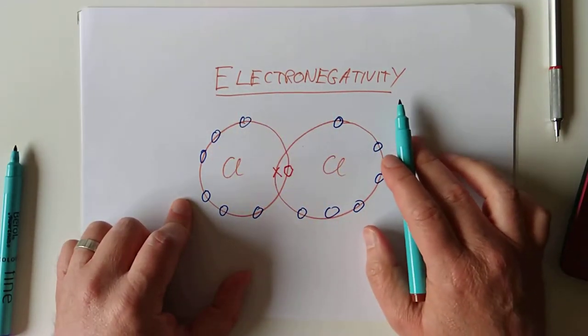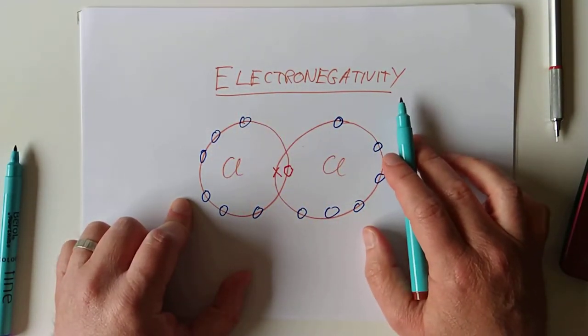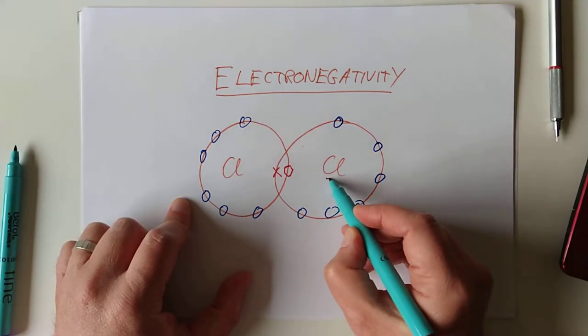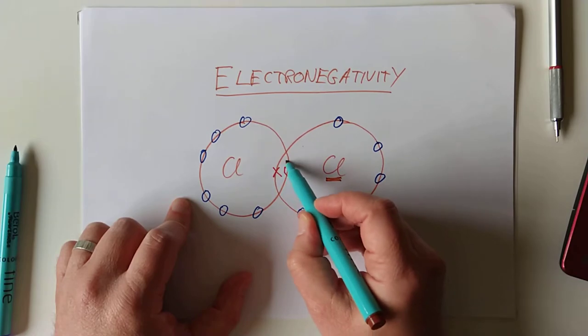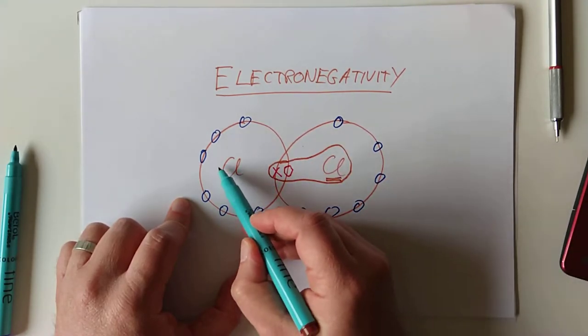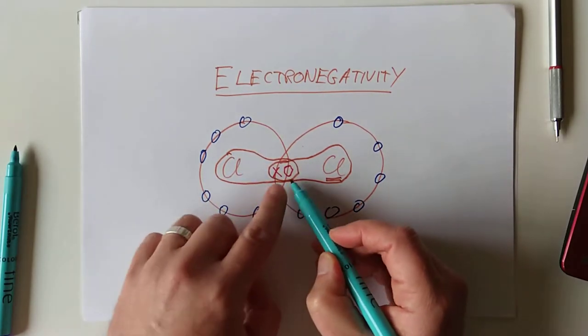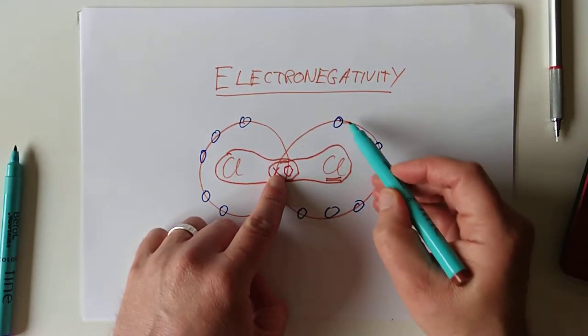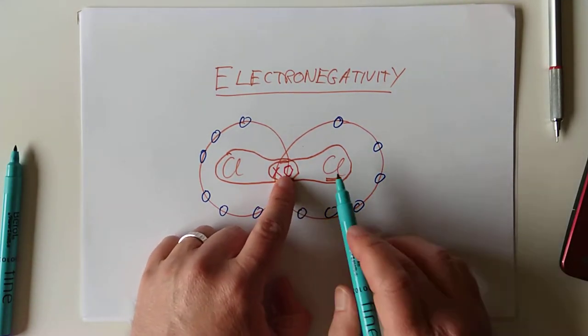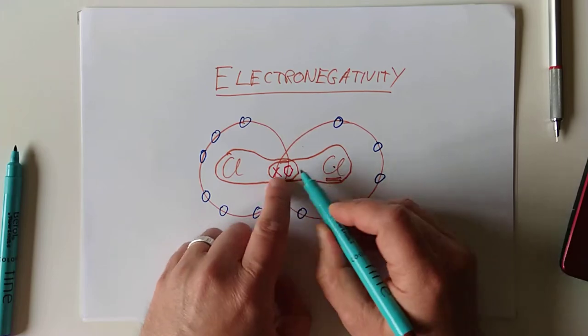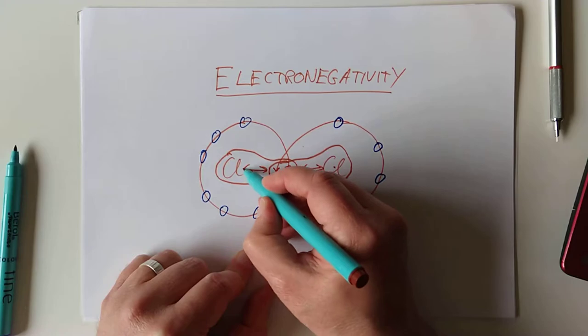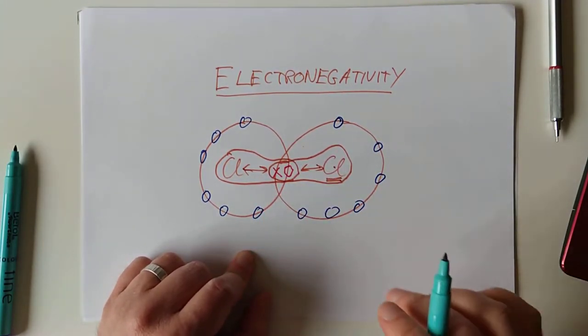Electronegativity. The definition of electronegativity is the pulling power, in other words, the force of attraction, that a particular atom has for the shared pair of electrons. So, how strongly is this atom and this atom, how strongly are they pulling on this shared pair of electrons? Nothing to do with these ones, so don't get mixed up with these. It's the shared pair and the attraction between the nucleus and the shared pair. That's the electronegativity. That's the pull there and the pull there. That's the definition of electronegativity.